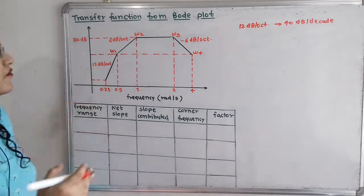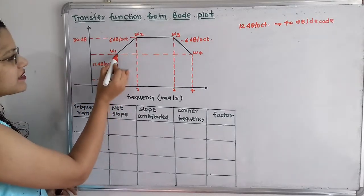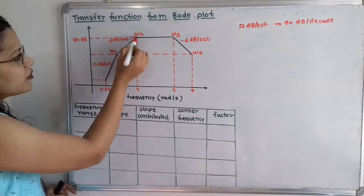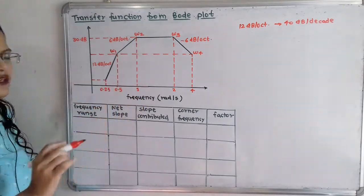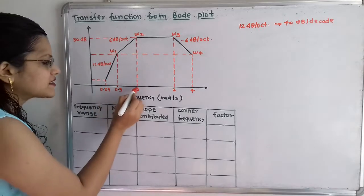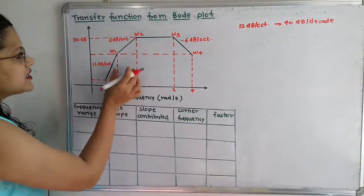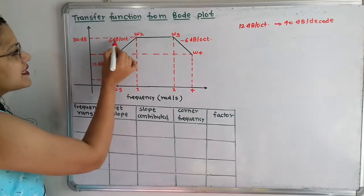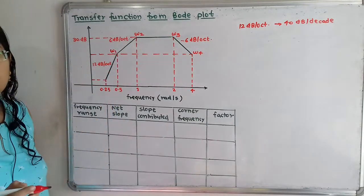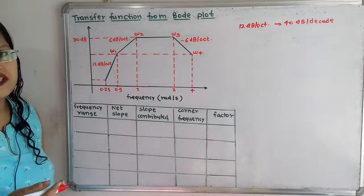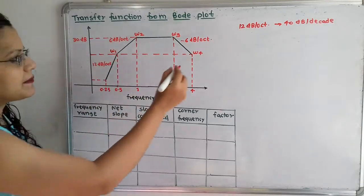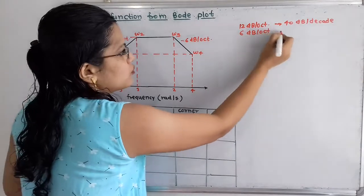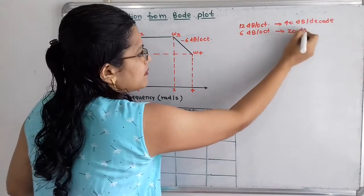Now moving to the next range: frequency omega 1 at 0.5 to frequency omega 2 at 1. Here also frequency is getting doubled, so the range is known as an octave. The slope is 6 dB per octave. So how can we convert this into decade? 6 dB per octave is equivalent to 20 dB per decade.